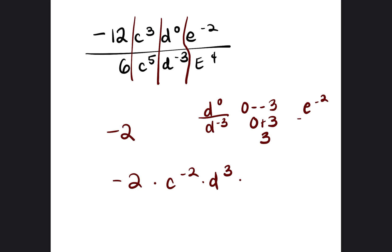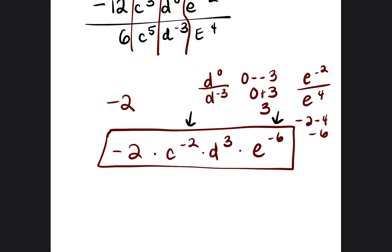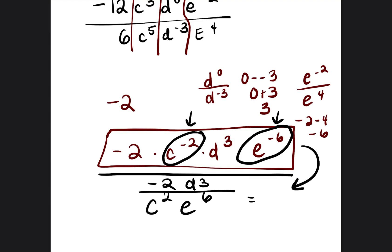Then e to the negative 2 divided by e to the 4th: negative 2 minus 4 is negative 6, so e to the negative 6. Our final answer should never have negative exponents — it can have negative coefficients, but not negative exponents. So we move c squared and e to the 6th to the bottom, making them positive. On top we're left with negative 2d to the 3rd power. Final answer: negative 2d to the 3rd over c squared e to the 6th power.